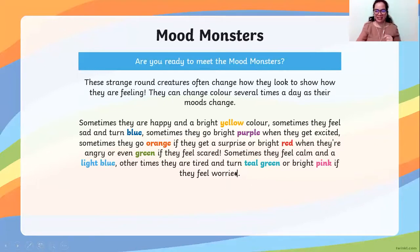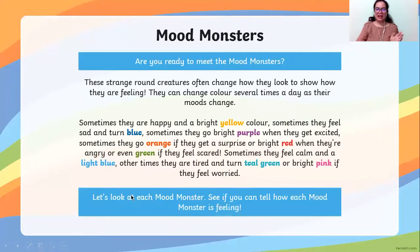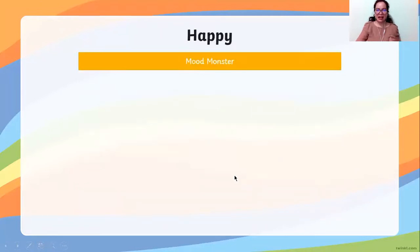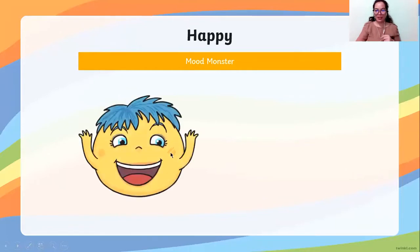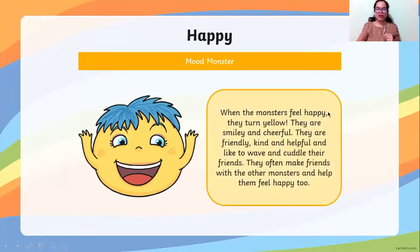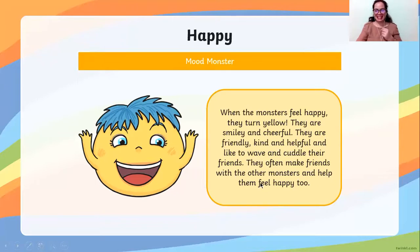Let's look at each mood monster and see if you can tell how each one is feeling. Happy — what's the color? It's yellow. When the monsters feel happy, they turn yellow. They are smiley and cheerful, friendly, kind, and helpful, and like to wave and cuddle their friends. They often make friends with other monsters and help them feel happy too.